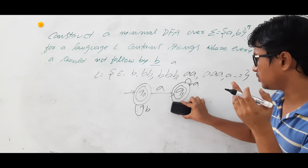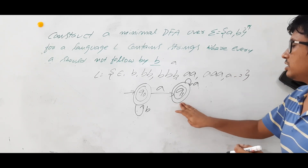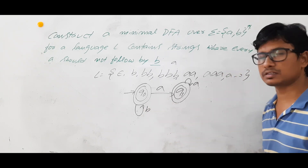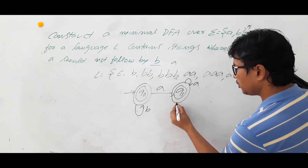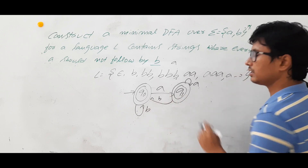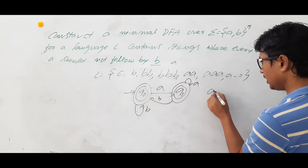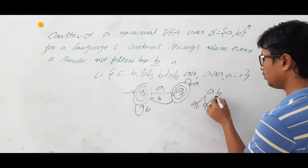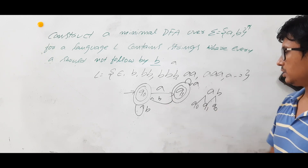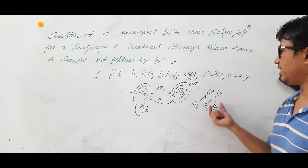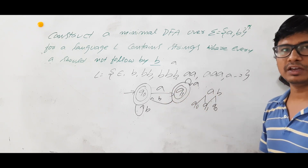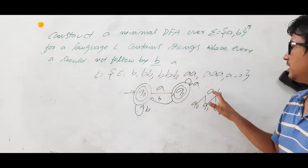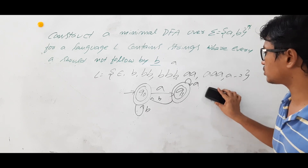Now for Q1 on B, there are two choices. If Q1 on B goes to Q0: take string AB — Q0 on A goes to Q1, Q1 on B goes to Q0, and Q0 is a final state, so AB would be accepted by the DFA. But AB does not belong to language L because A is followed by B. So that assumption is wrong.